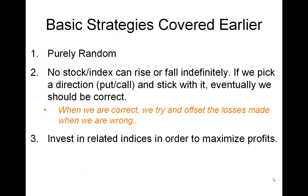We also talked about investing in related indices in order to maximize our profits. Related indices are those linked via one or more currency — for example, the US dollar to the euro and the US dollar to the Japanese yen are linked via the US dollar. We talked about this in part three, and part four dealt with the majority vote strategy, where we just go with whatever the majority of people are doing.